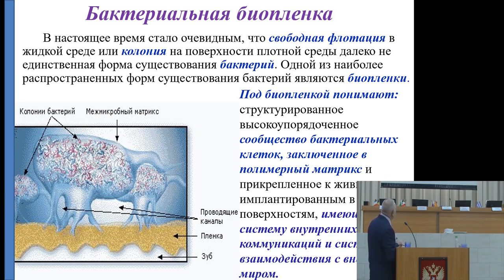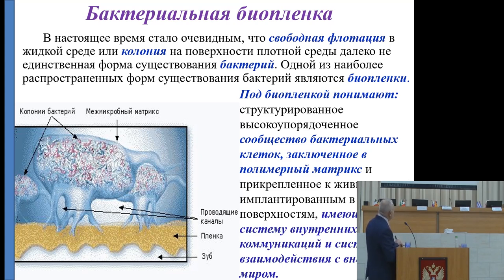В настоящее время стало очевидным, что свободная флотация в жидкой среде или колонии на поверхности плотной среды — далеко не единственная форма существования бактерий. Одной из наиболее распространённых форм существования бактерий являются биопленки. Под биопленкой понимают структурированные высокоупорядоченные сообщества бактериальных клеток, заключённые в полимерный матрикс и прикреплённые к живым или имплантированным в организм поверхностям.